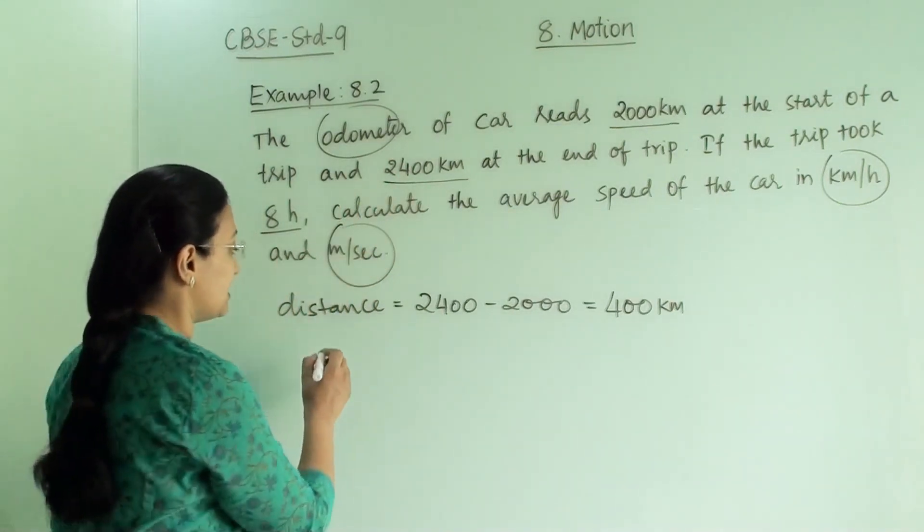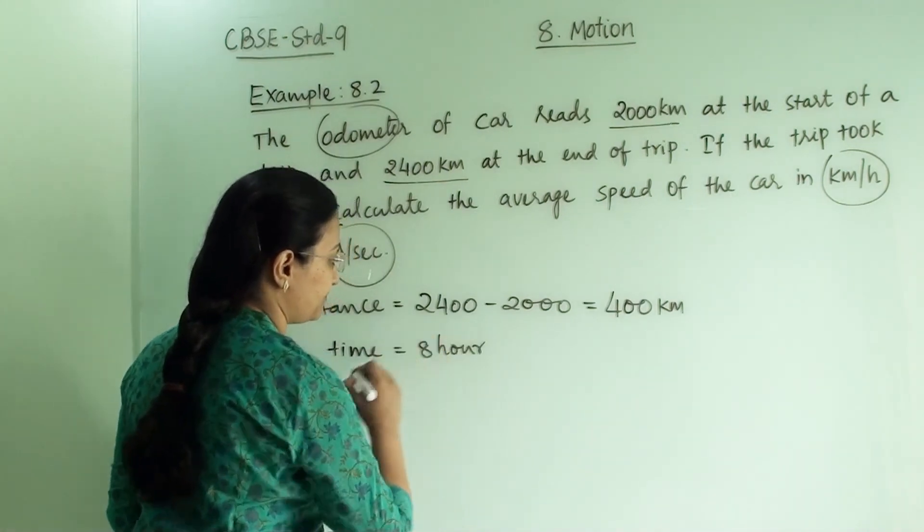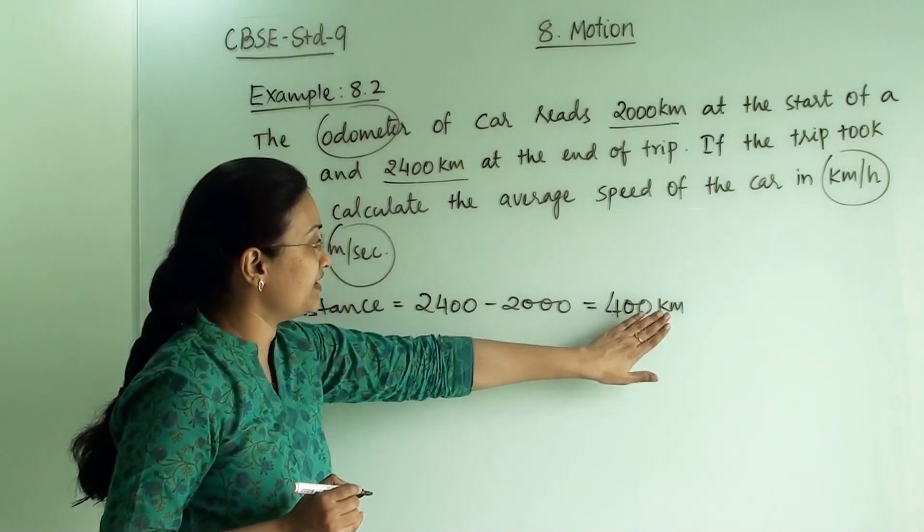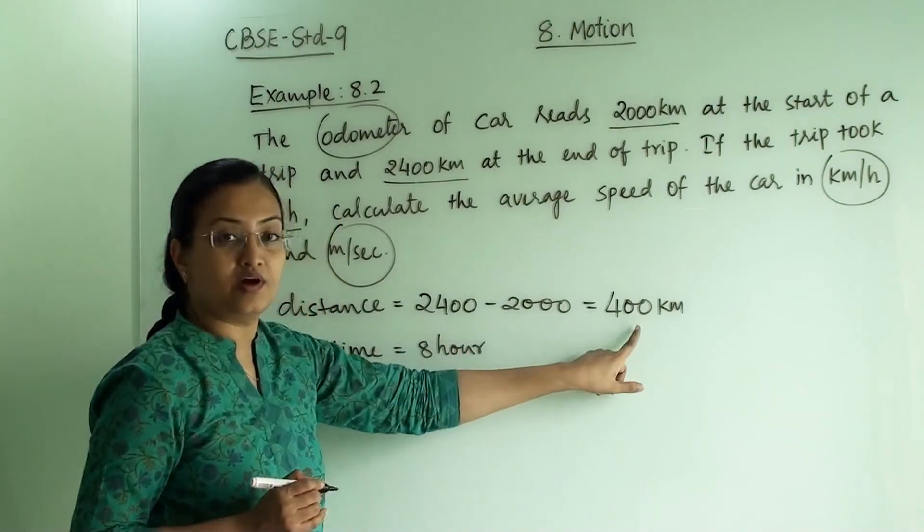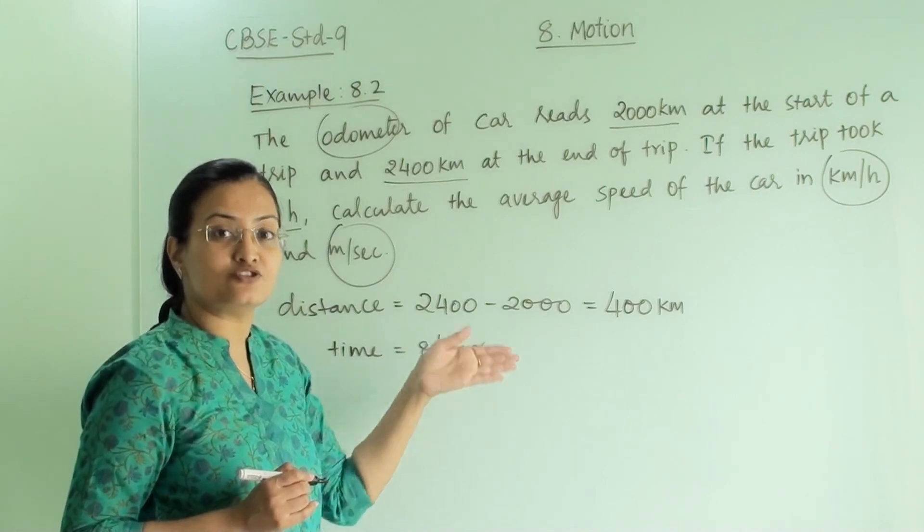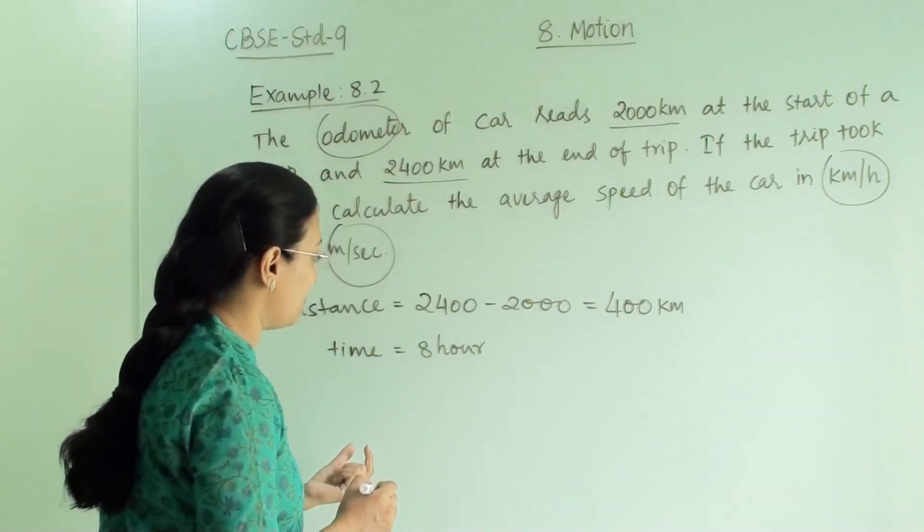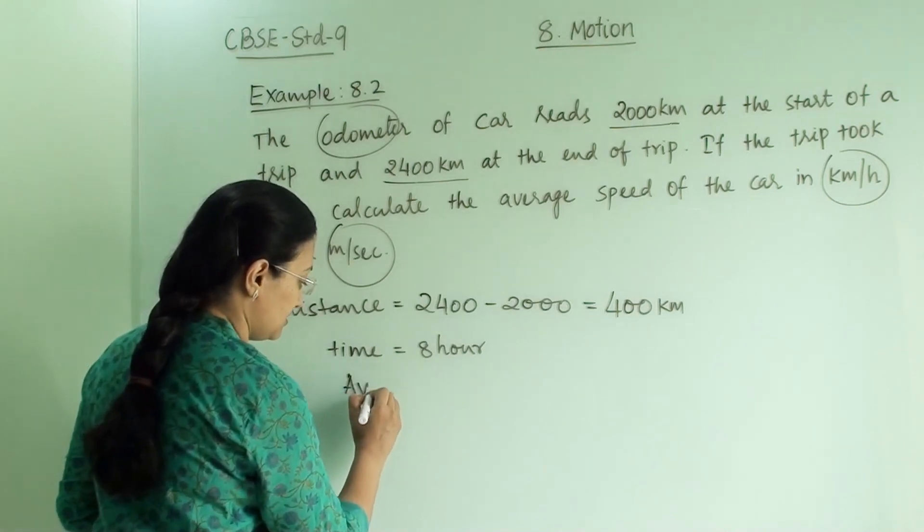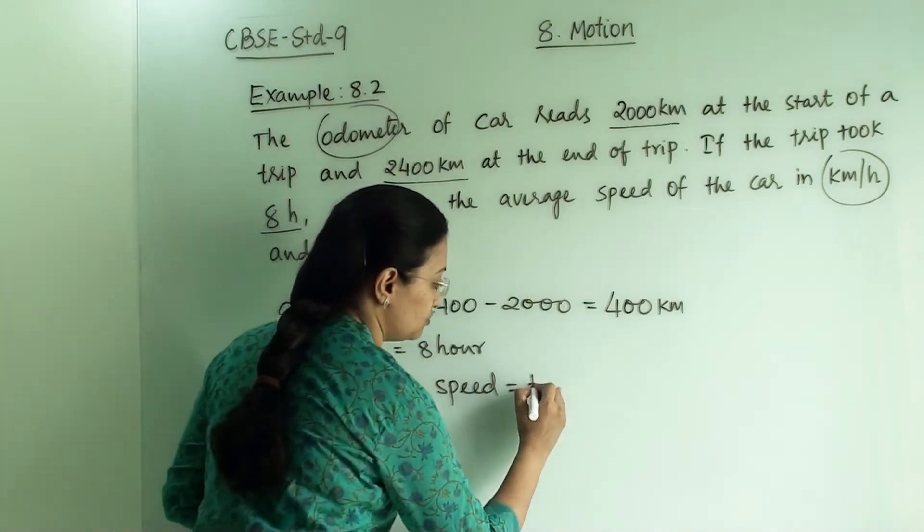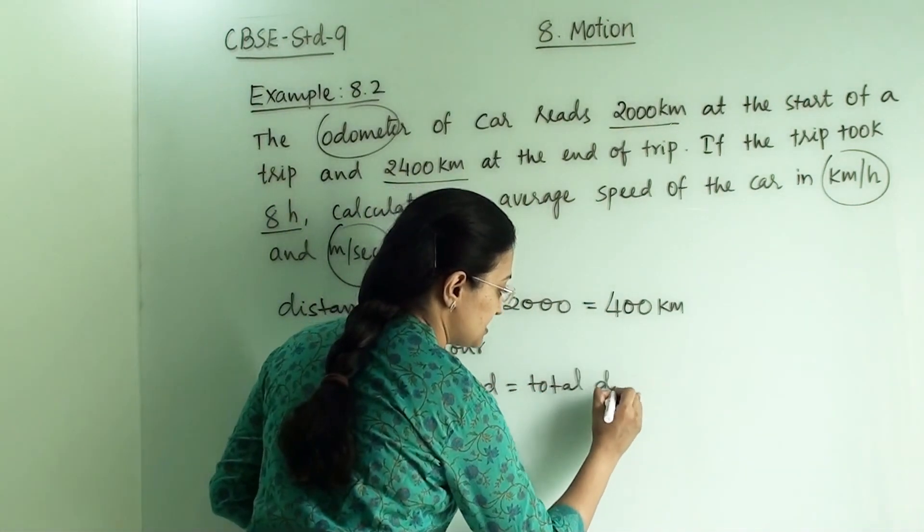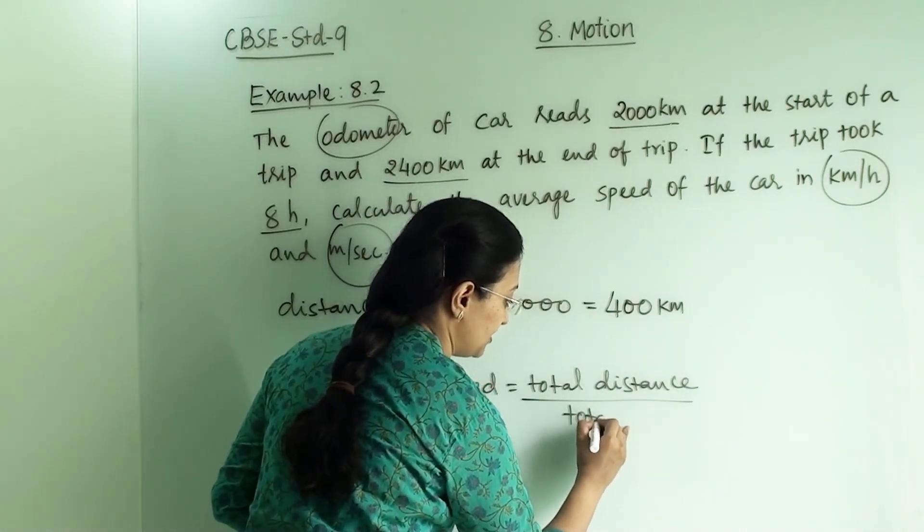Now it has taken 8 hours. This 400 is already in km and this is in hour, so we do not need to convert any of that. First let us find out the answer in km per hour. Average speed equals to total distance divided by total time taken.